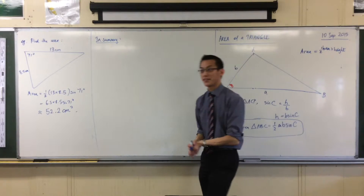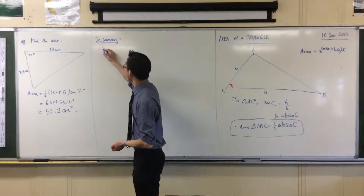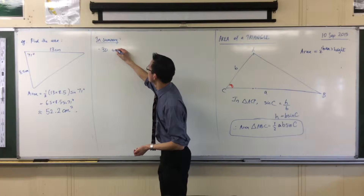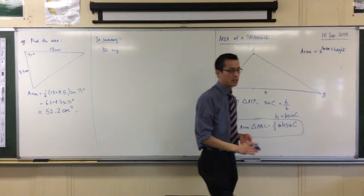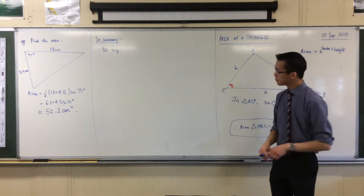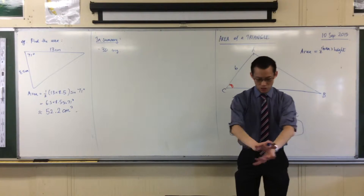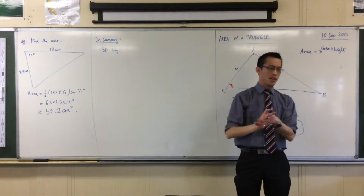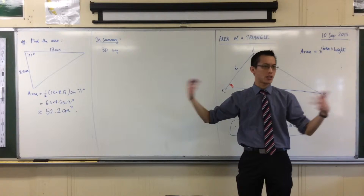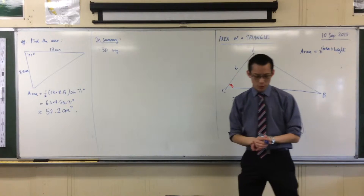Let me take you on a quick journey through our very first lesson together. We had a look at three-dimensional trigonometry — it was the same stuff with right-angled triangles, but we made things not just flat, but going up into the air, like measuring the height of a flagpole or a tree or something like that. So we started with 3D.